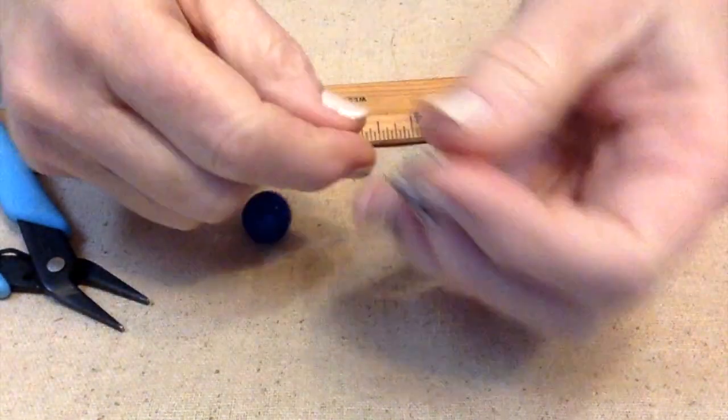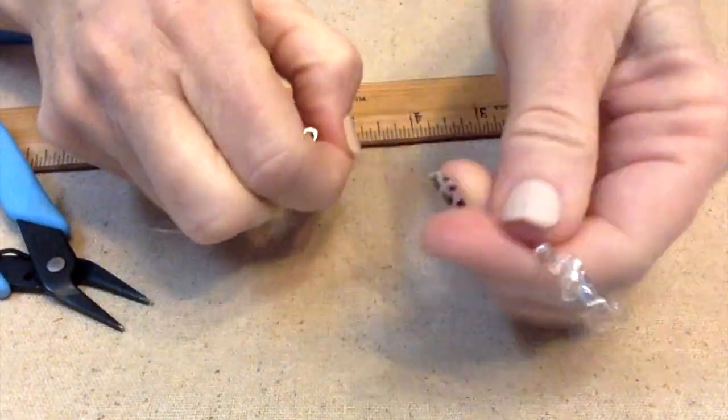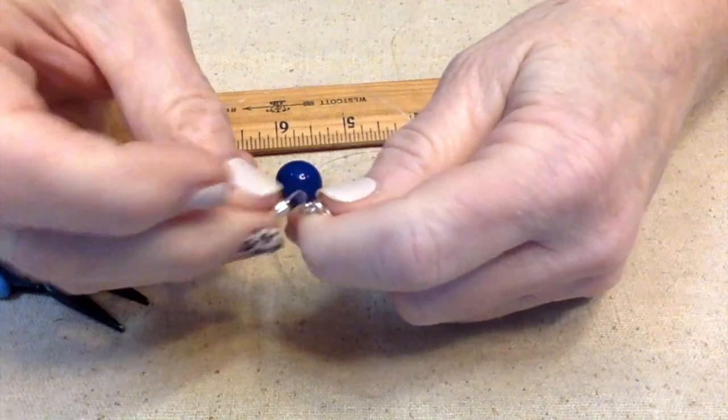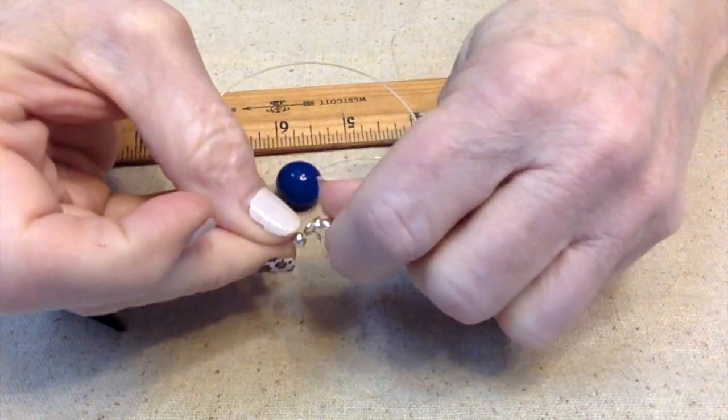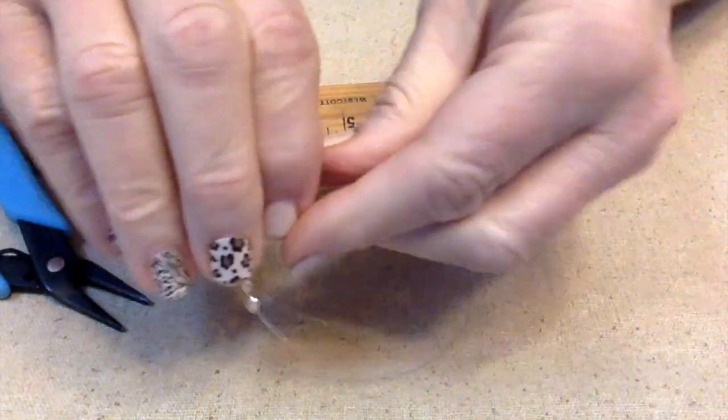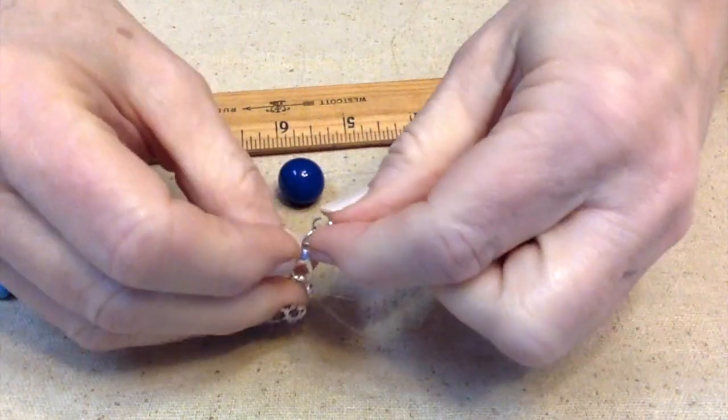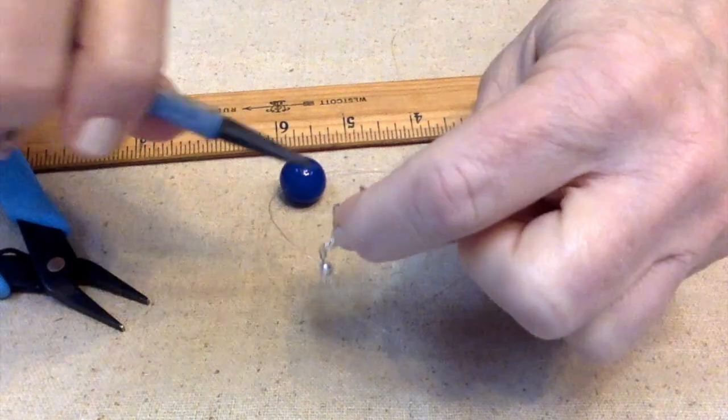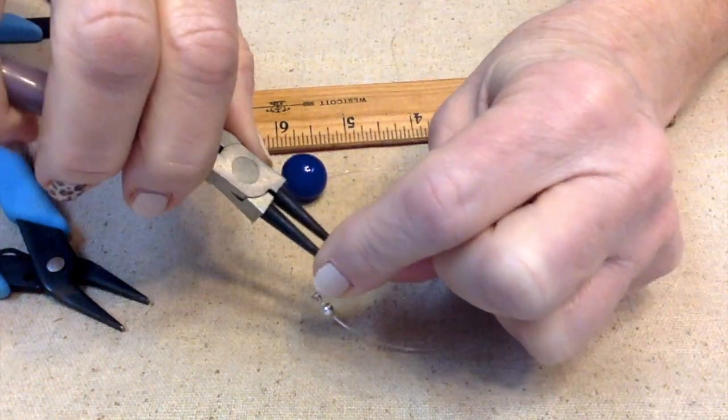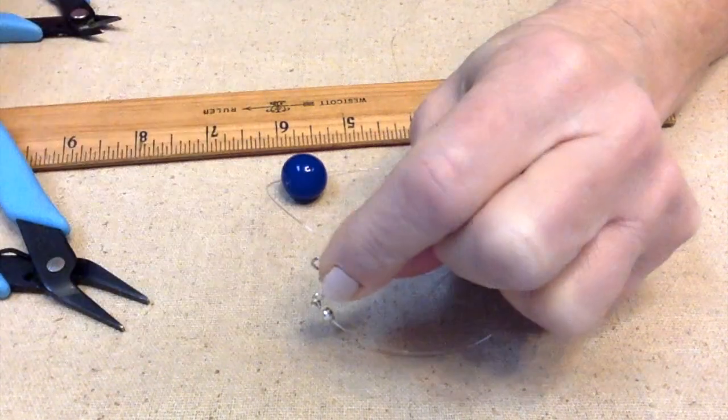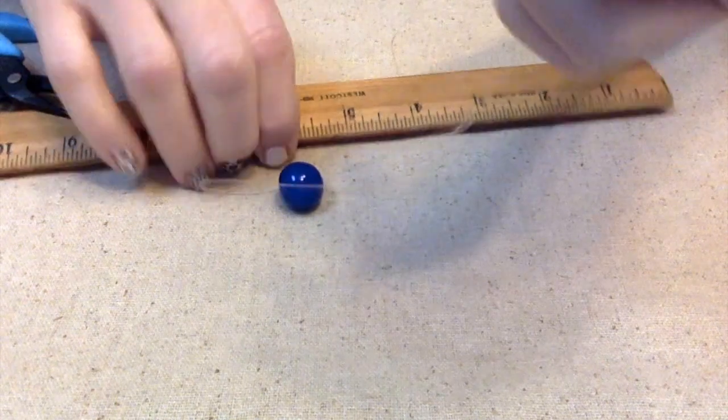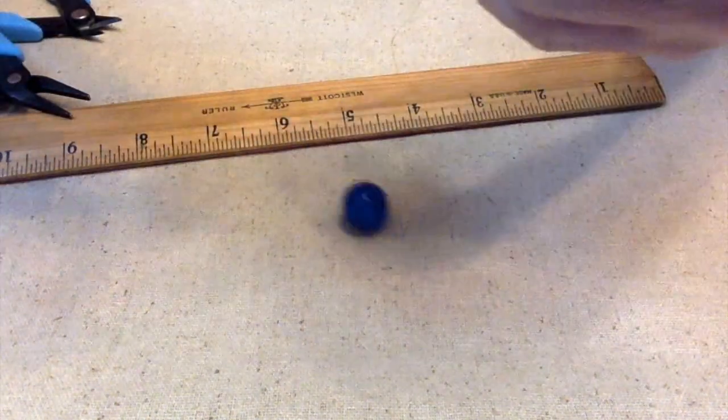Then you're going to finish it up by putting the hook into your split ring, or jump ring, or you can use split ring too. Sometimes I use one, sometimes I use the other. Go ahead and close it. And you have yourself a finished necklace.